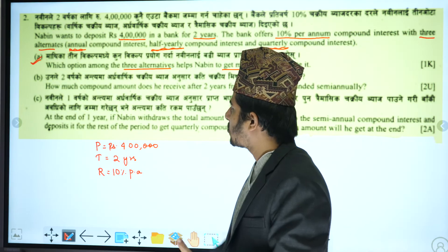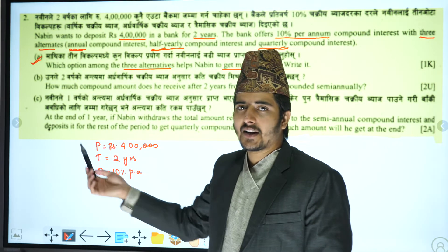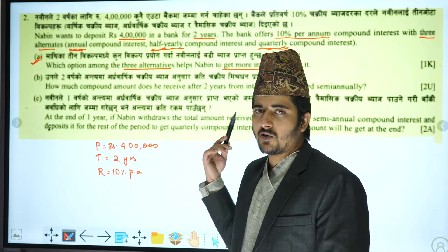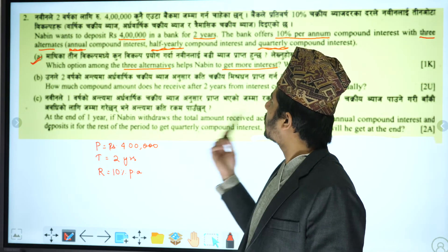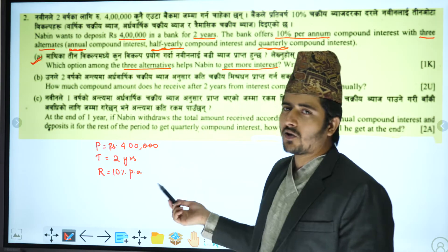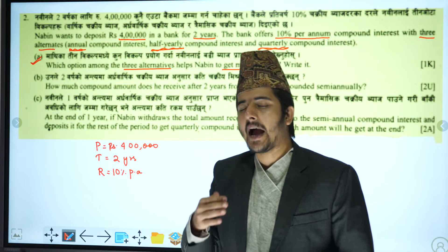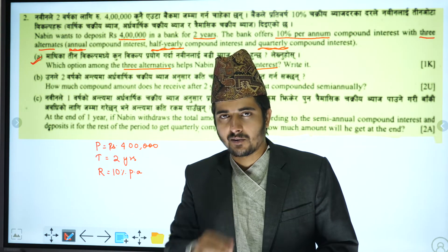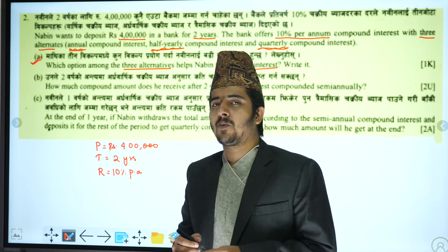If you have to calculate the annual compound interest, you will apply the compound interest formula, which uses the principal and the rate to determine the total amount of interest.